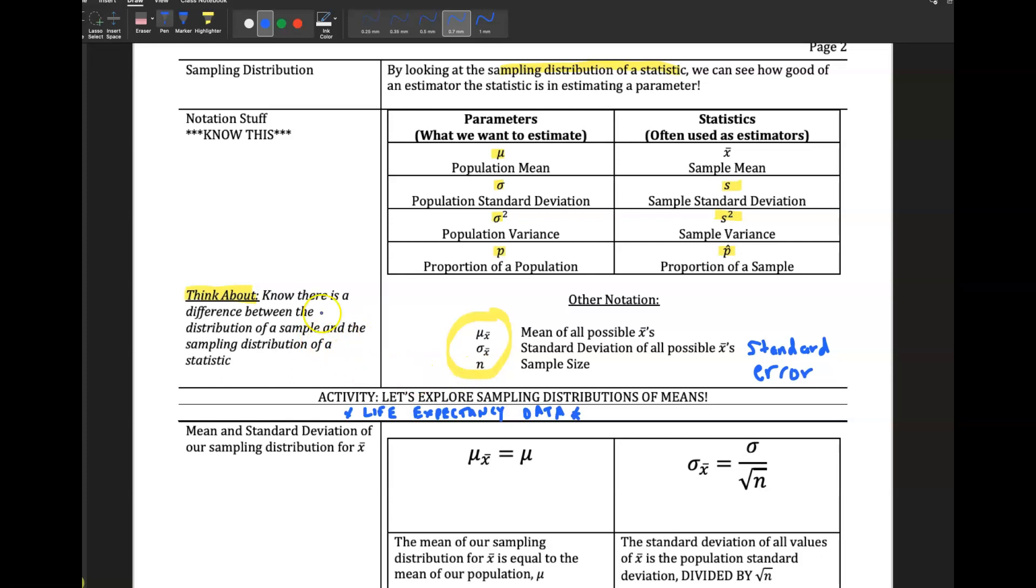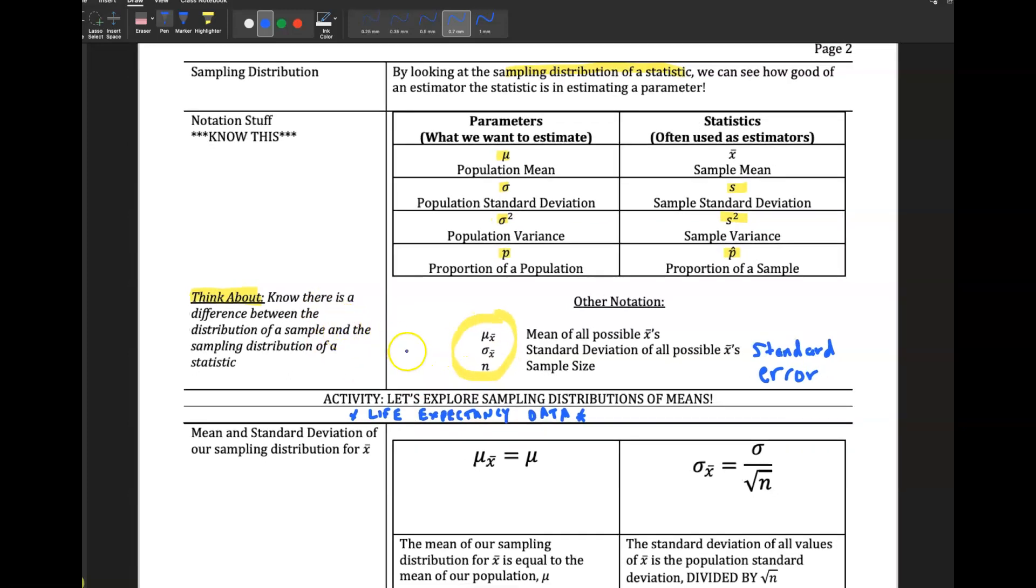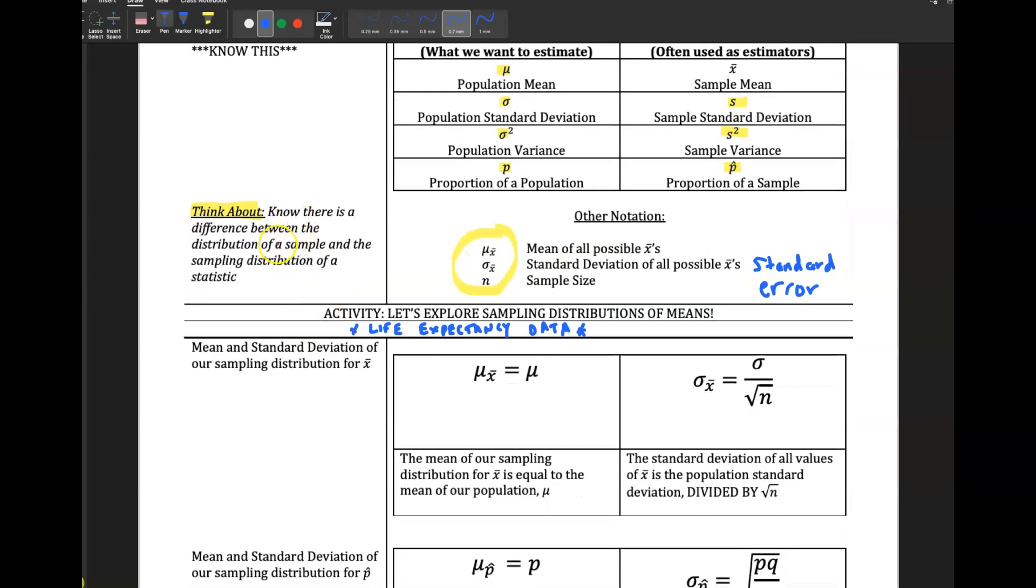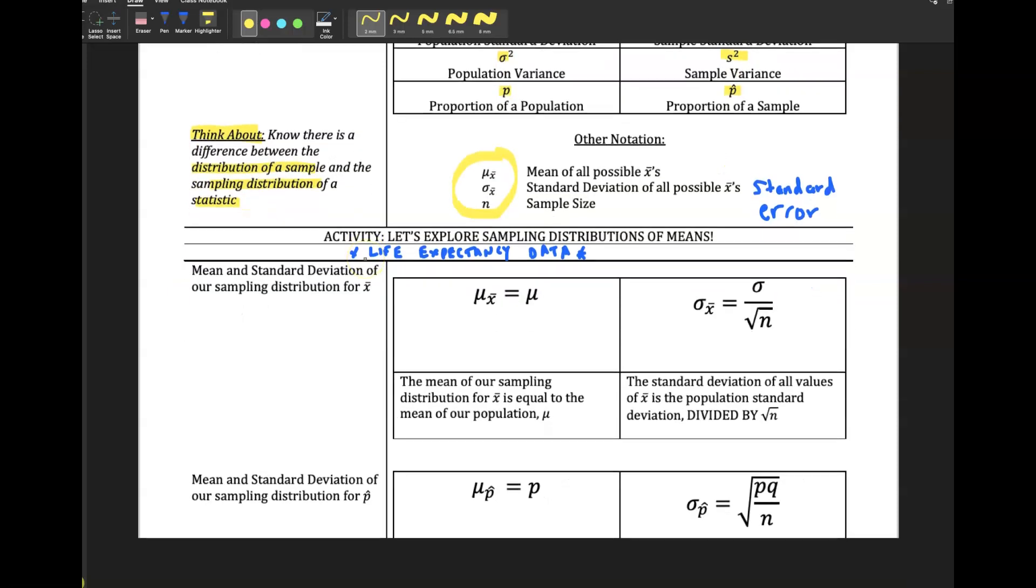And so let me show you a picture of what a sampling distribution looks like, using life expectancy data from the world. And so what you're going to think about, I just want you to think about the difference between the distribution of a sample, right? That's just one distribution of a sample and the sampling distribution of a statistic. That's what we're looking at. There are two things to examine here. So let's take a look real quick at that.